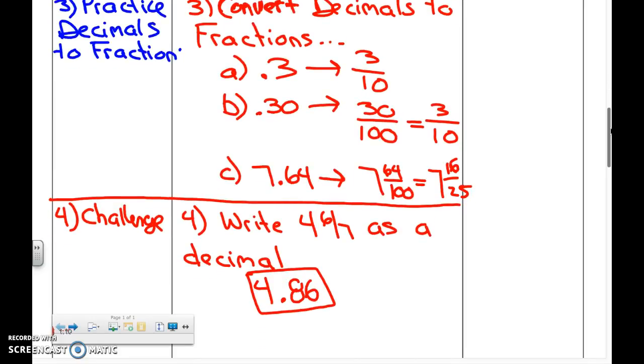Number four, the challenge: four and six sevenths. We know that four would be the whole part of our answer when going to a decimal. And then 86 hundredths comes from six divided by seven.